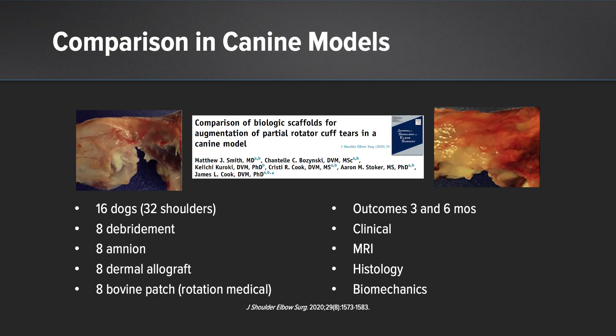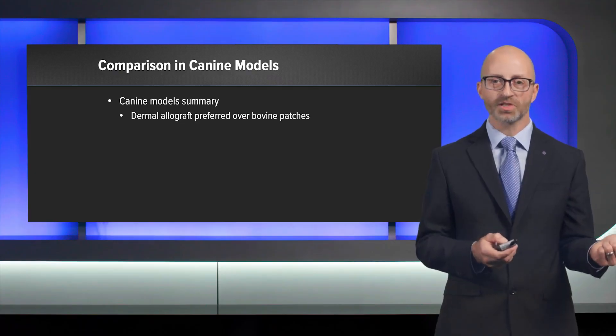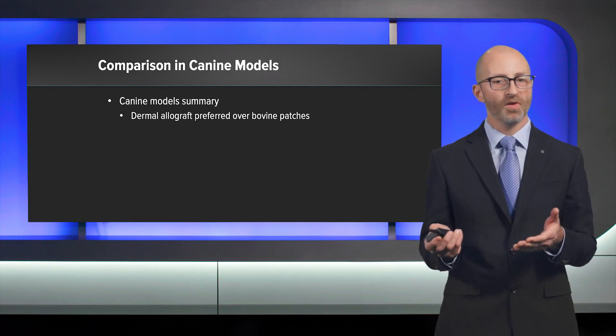A basic science study by Jimmy Cook looked at 16 dogs, comparing debridement, amnion, dermal allograft, and bovine patch, examining clinical outcomes in canine models at three and six months with MRI, histology, and biomechanics. The bottom line: tissue augmentation improved outcomes compared to debridement alone. However, inflammatory reactions were seen in the bovine patch group, which I suspect is related to the DNA issue. In summary, canine models favor dermal allograft over bovine patches.